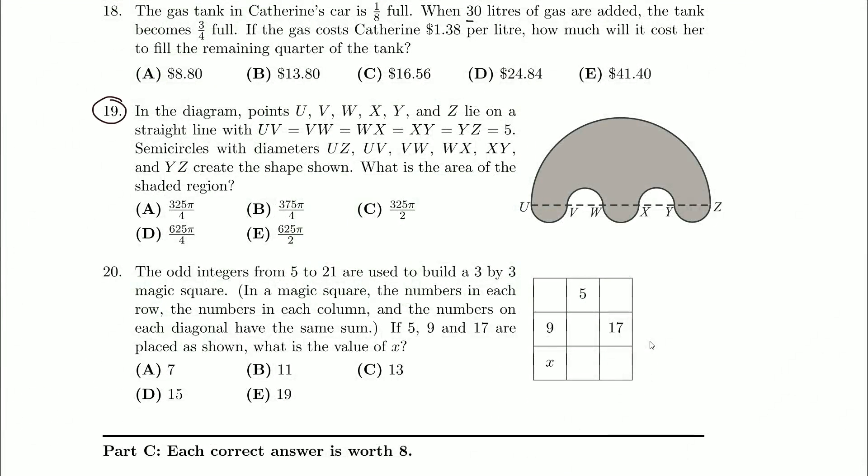In the diagram, points U, V, W, X, Y, and Z lie on a straight line and UV equals VW equals WX. All these lengths are equal and they're all five.